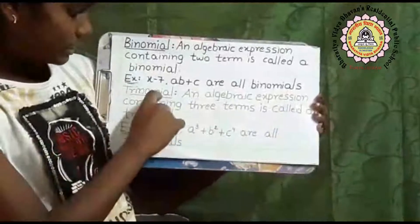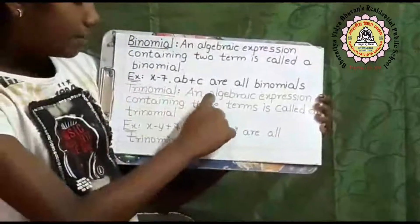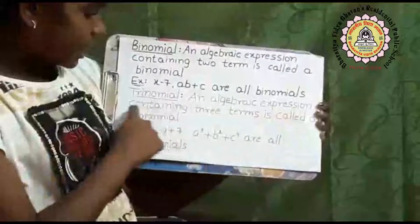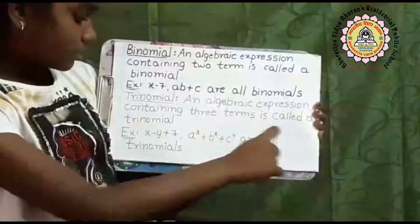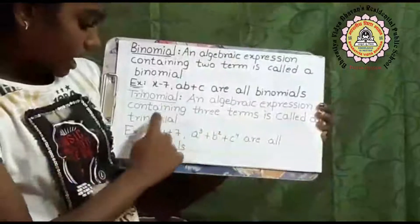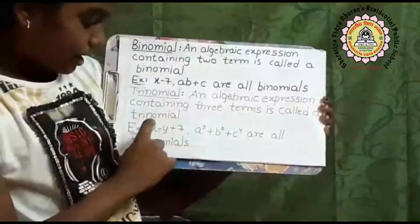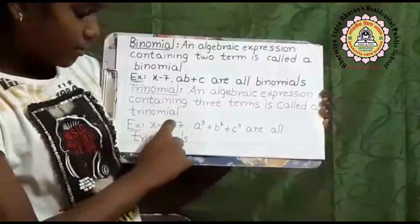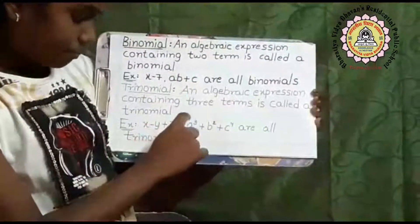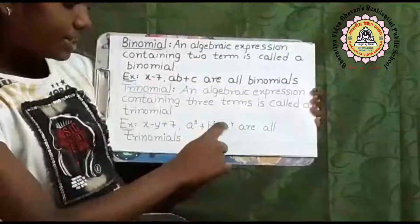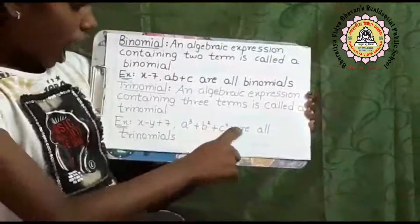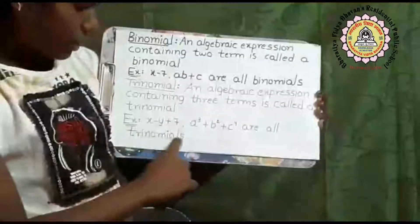Trinomial: an algebraic expression containing three terms is called a trinomial. Example: x minus y plus 7, a cube plus b square plus c power 4 are all trinomials.